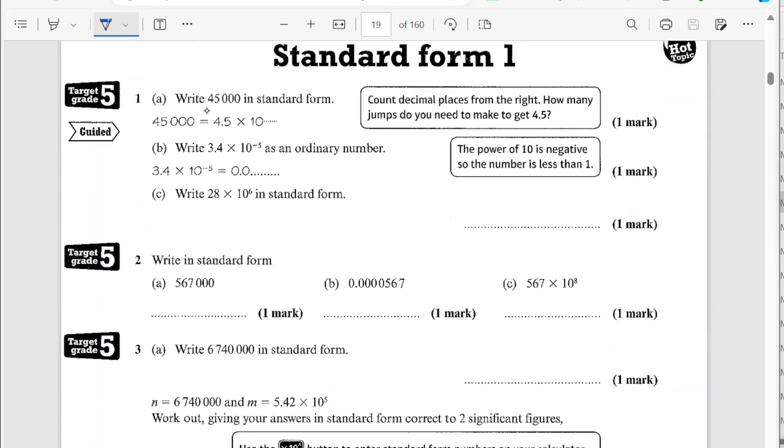So for question 1, write 45,000 in standard form. So 45,000 we're in effect writing this as a number between 1 and 10 times by a power of 10. The way that we do it is we look at where we would move our decimal point to. So we've moved it from here to here. So we've moved it 1, 2, 3, 4 places.